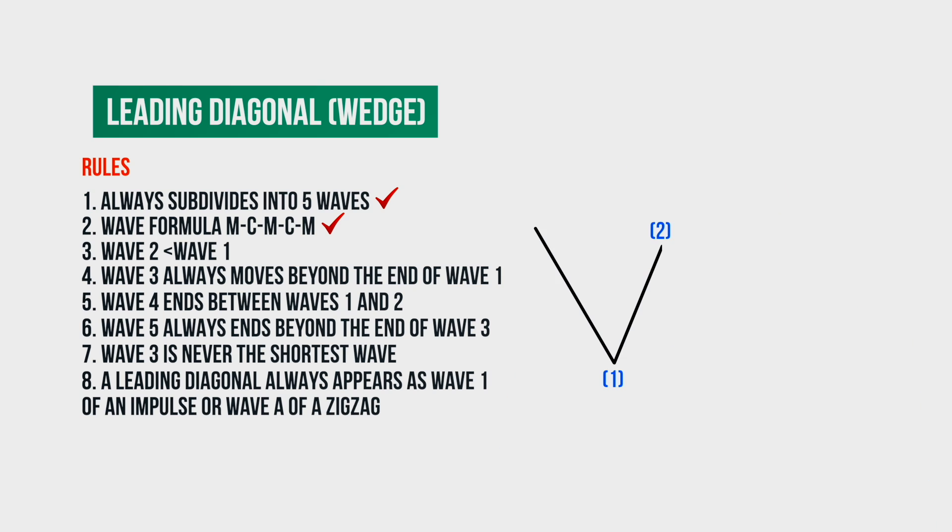Further, the second wave of the leading diagonal is always shorter than wave one. Wave three always goes beyond the end of wave one, and the fourth wave of the leading diagonal, descending, ends in the area between the lines drawn through the tops of waves one and two.